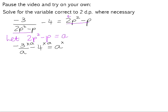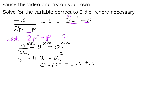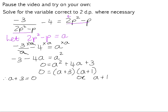We multiply through by the lowest common denominator, which is a. That gives us negative 3 (the a divided by a is 1) minus 4a, equals a squared. Getting that into standard form: a squared plus 4a plus 3 equals 0. This factorizes into (a plus 3)(a plus 1), so a plus 3 equals 0 or a plus 1 equals 0. But we're solving for p, so we substitute 2p squared minus p back in place of a: 2p squared minus p plus 3 equals 0, and 2p squared minus p plus 1 equals 0.